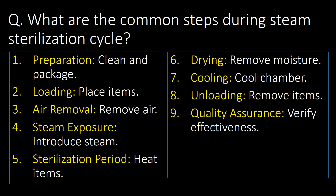What are the common steps during a steam sterilization cycle? The first step is preparation — here we clean and package the components or items. The second step is loading — as per the validated load pattern, we place the items inside the autoclave chamber. The third step is air removal — in this step, with the help of vacuum, we remove air from the autoclave chamber.